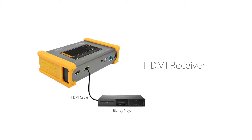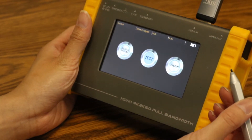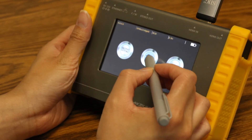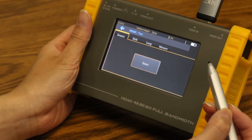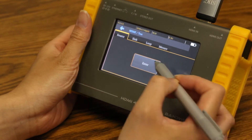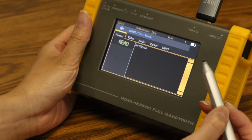Second, you can use this as an HDMI receiver, which means our product acts as a TV for the source you connect. The purpose is to test and analyze the source for its video format, audio, and packet information. At the dashboard, select test, under source, select enter, then select read.